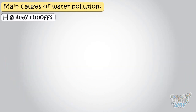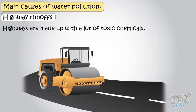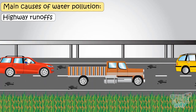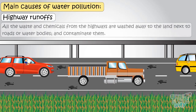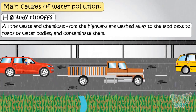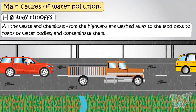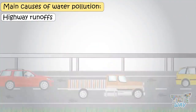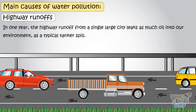Highway runoffs. Highways are made with a lot of toxic chemicals, and there is spilled fuel, brake fluids, and other wastes and dust from tires. All the waste and chemicals from the highway are washed away to the land next to roads or water bodies and contaminate them. It has been estimated that in one year, the highway runoff from a single large city leaks as much oil into our environment as a typical oil tank spill.